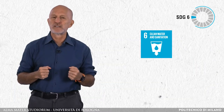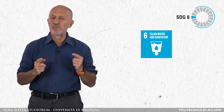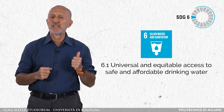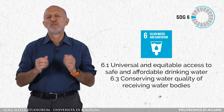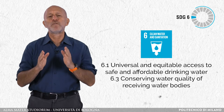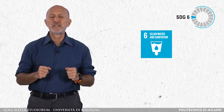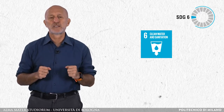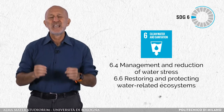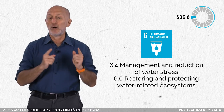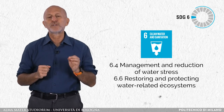The achievement of SDG targets 6.1 and 6.3 — respectively, universal and equitable access to safe and affordable drinking water, and conserving water quality of receiving water bodies — is based upon mapping of aquifers and recharge areas along with the evaluation of vulnerability of aquifers to pollution. The achievement of SDG targets 6.4 and 6.5 — management and reduction of water stress, and restoring and protecting water-related ecosystems — is based upon estimation of groundwater recharge along with identification and protection of groundwater-dependent ecosystems (GDEs). It requires a special focus on drought security and evaluation of long-term sustainability of the local base flow of streams as guaranteed by groundwater discharge.